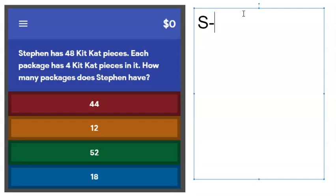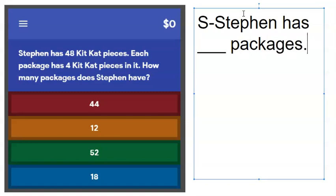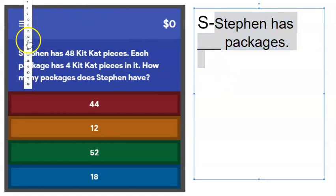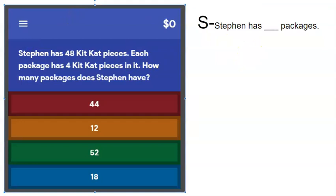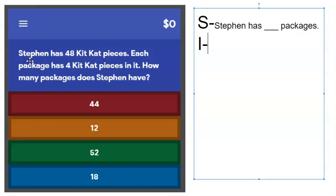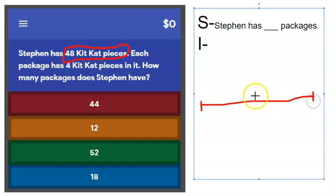For S, my statement, based on the question: Stephen has blank packages. For I, I stands for identify the key details or key information. So what is the key information we have here? I know that he has 48 Kit Kat pieces — so 48 is his total amount.